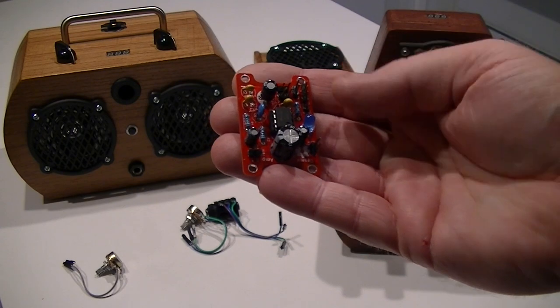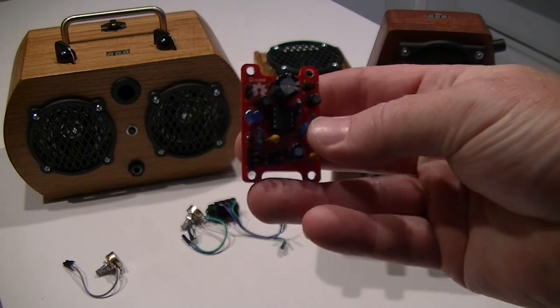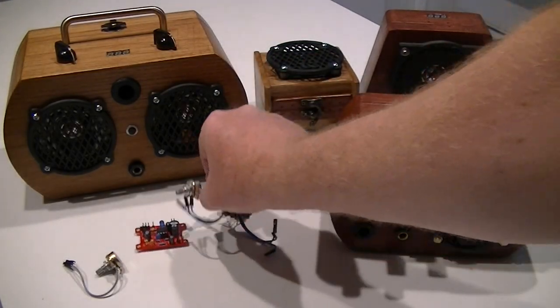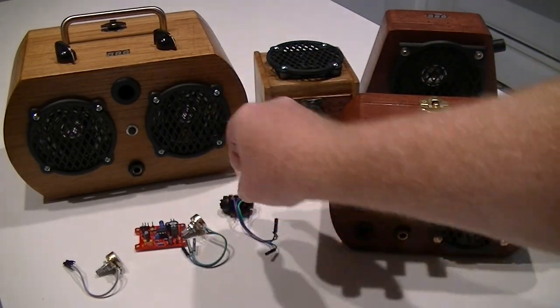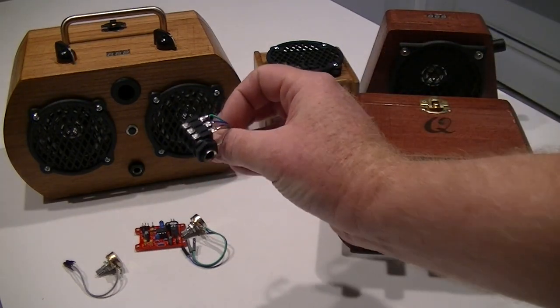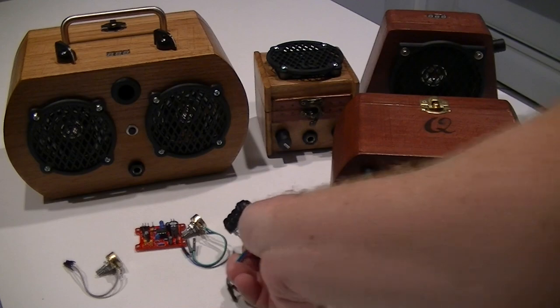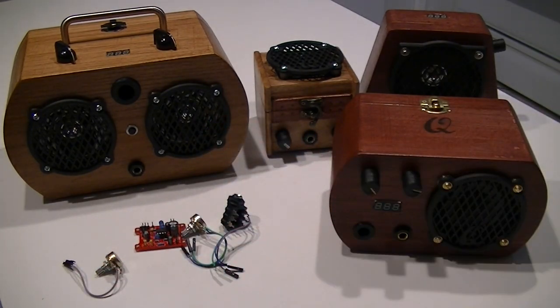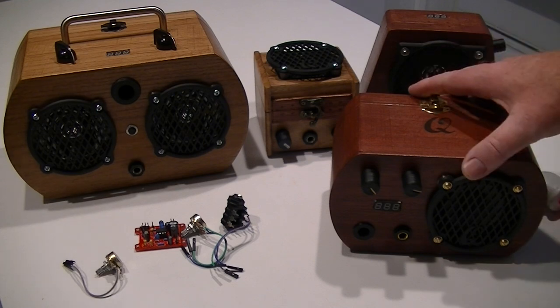It goes over the assembly of the amp board as well as preparing the potentiometers for the volume and gain control, and the audio jack which is also used as a power switch when you plug in. You can refer to that - the link will be here or somewhere there.